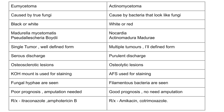In eumycetoma, the tumor is single, large, and well-defined, whereas in actinomycetoma there are multiple tumors that are ill-defined. Serous discharge is seen in eumycetoma, while purulent discharge is seen in actinomycetoma.